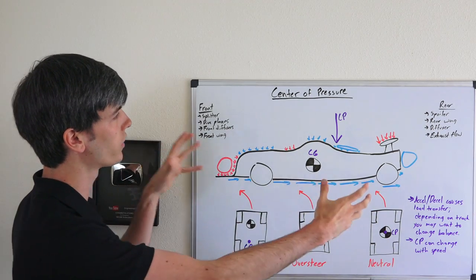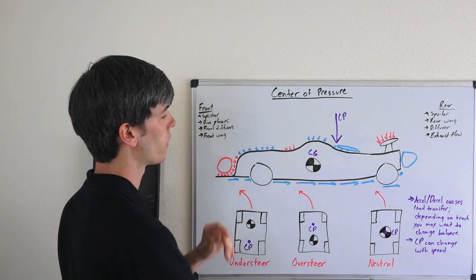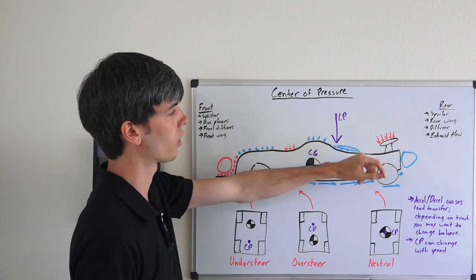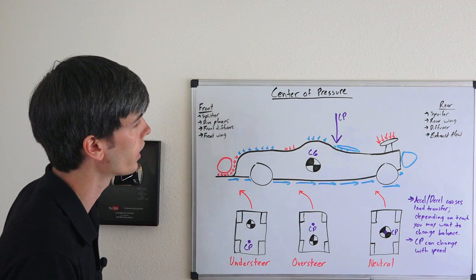So some different ways that you change the center of pressure's location front to rear, some of them seem pretty obvious. For the rear, if you have a spoiler or rear wing, you're adding a lot of downforce to that rear area.